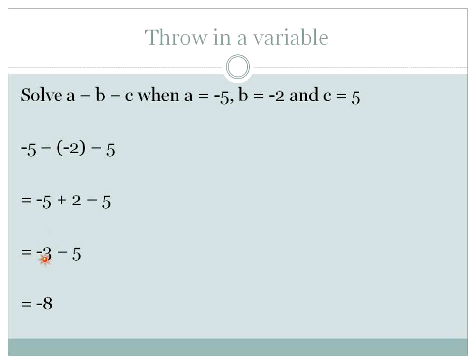So in other words, it would be like starting at negative 3 and subtracting 5 more. All right, I owe 3 dollars, now I owe another 5, so I owe a total of 8, I'm negative 8 dollars. All right, or I'm subtracting 8. And so that's how things happen when we're throwing in variables.